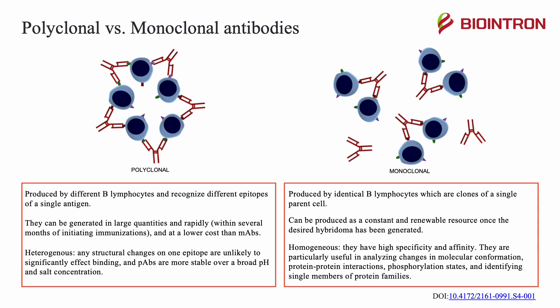Meanwhile, monoclonal antibodies are produced by identical B lymphocytes, which are clones of a single parent cell. Polyclonal antibodies can be generated in large quantities and rapidly within several months of initiating immunizations and at a lower cost than monoclonal antibodies. However, they cannot be produced as a constant and renewable resource once the desired hybridoma has been generated.